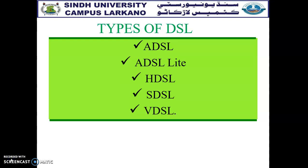SDSL — Symmetric Digital Subscriber Line — is designed purely for business purposes and has a high bandwidth rate compared to ADSL. However, it has a higher downstream rate but a lower upstream rate.